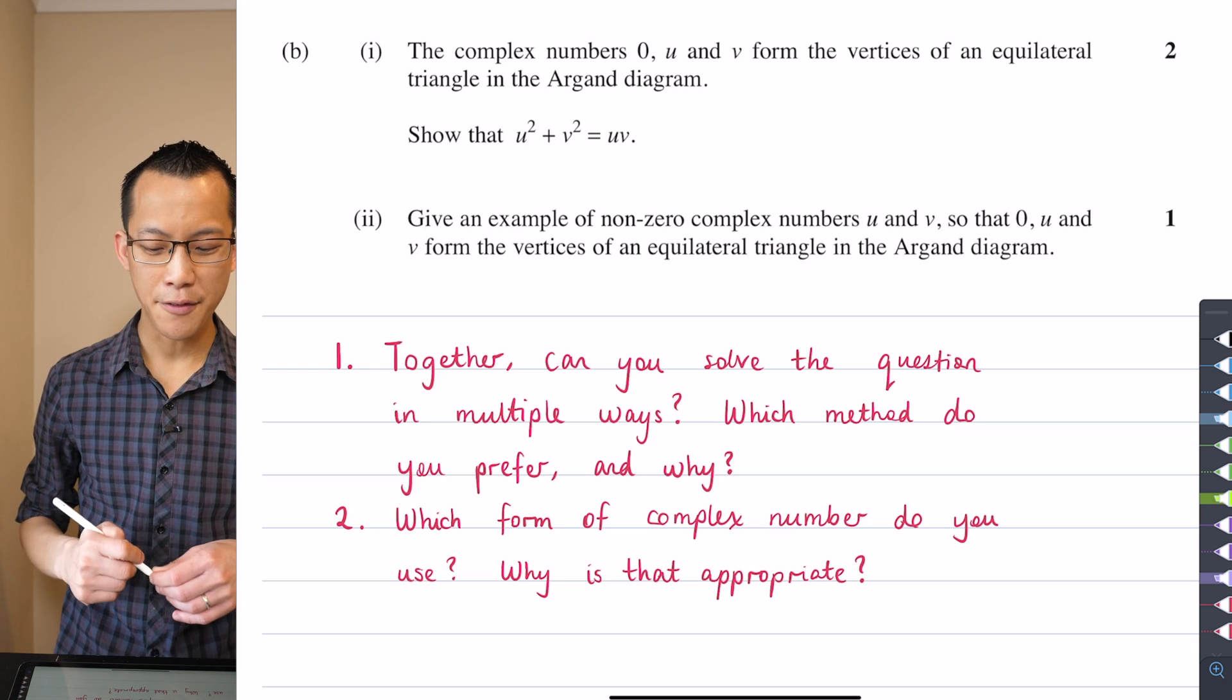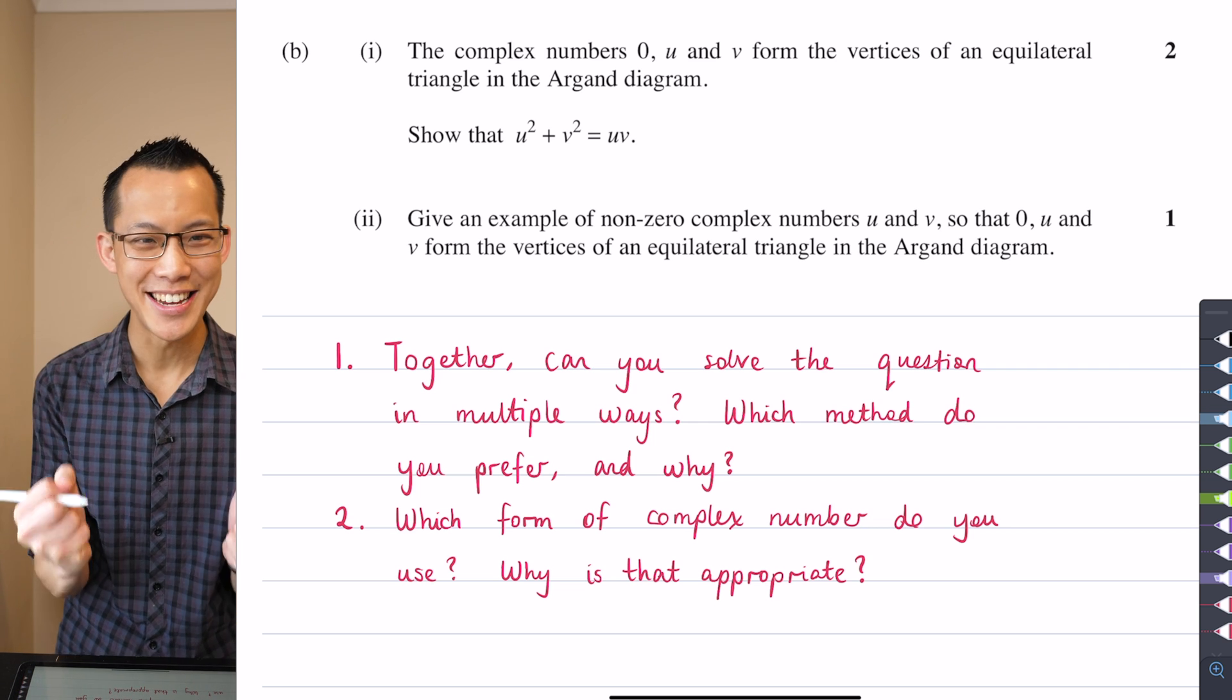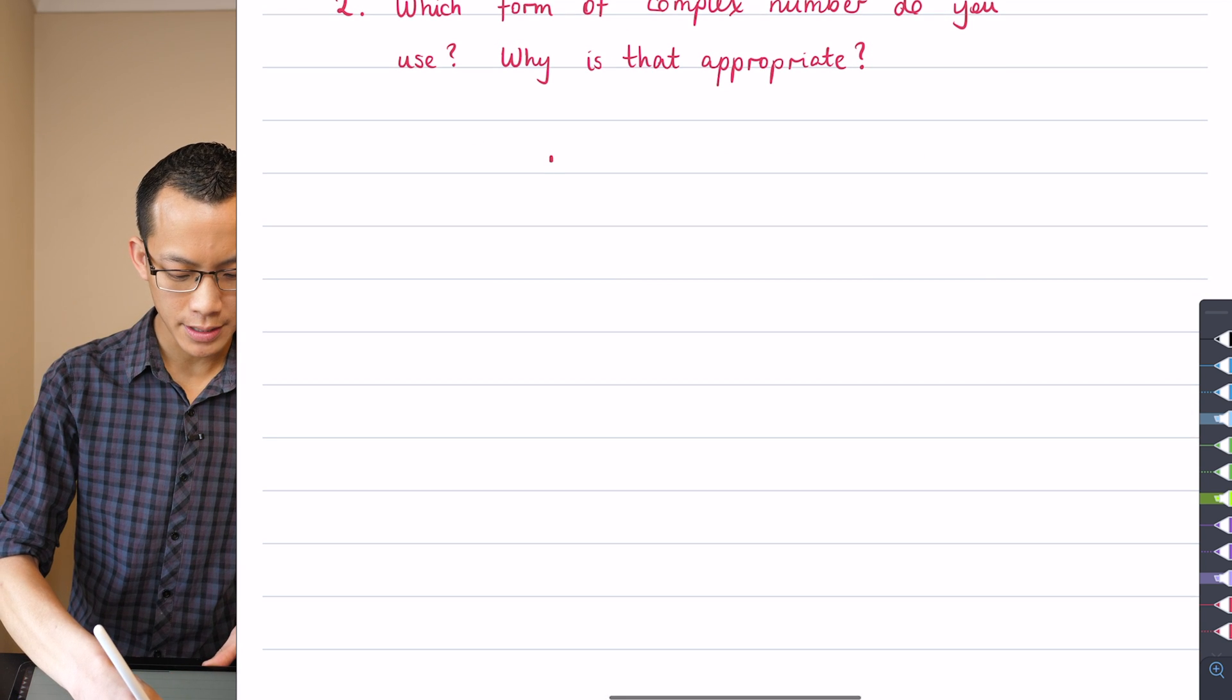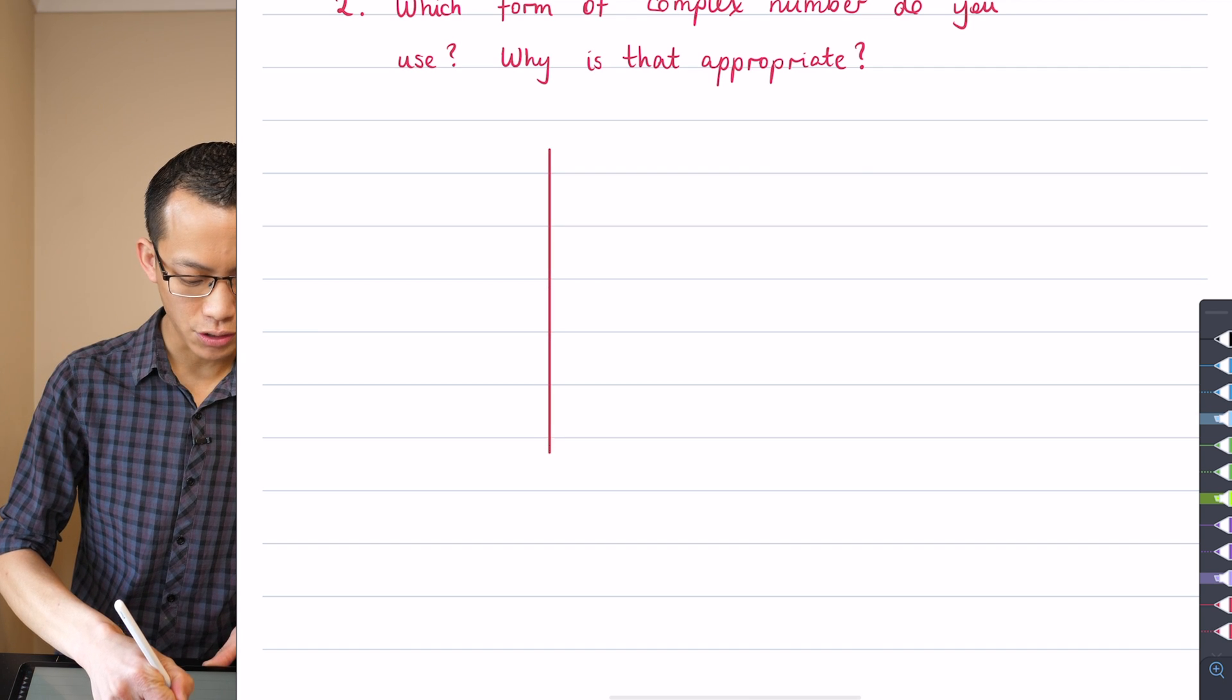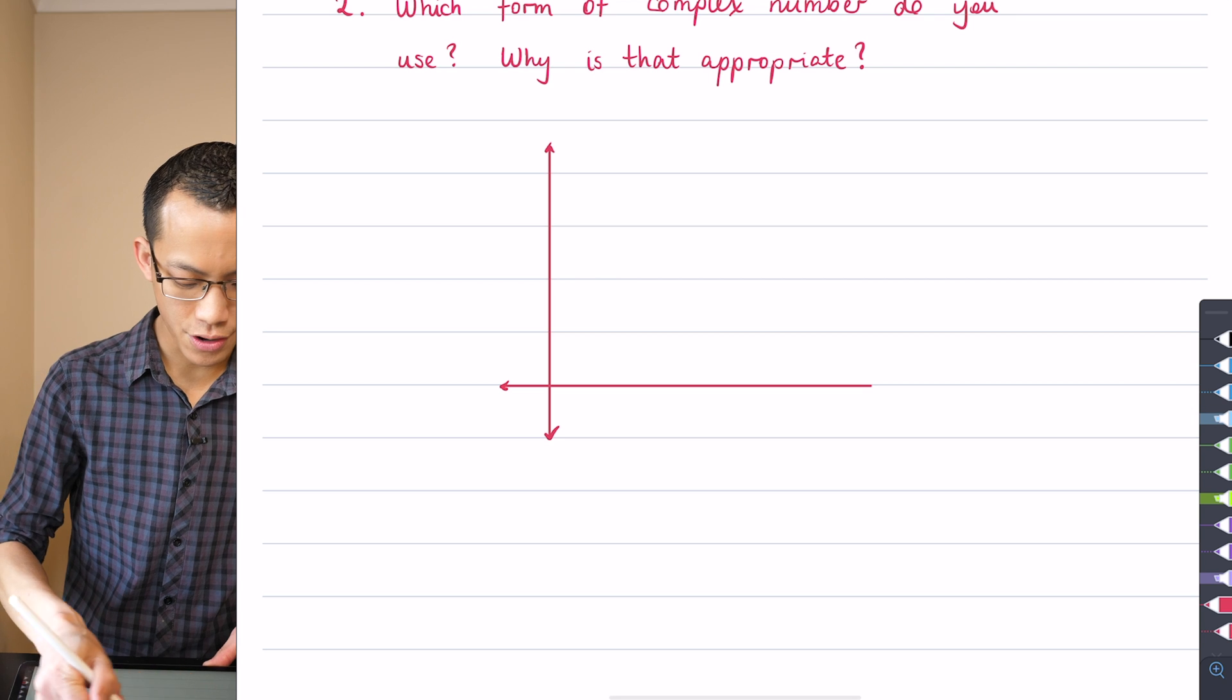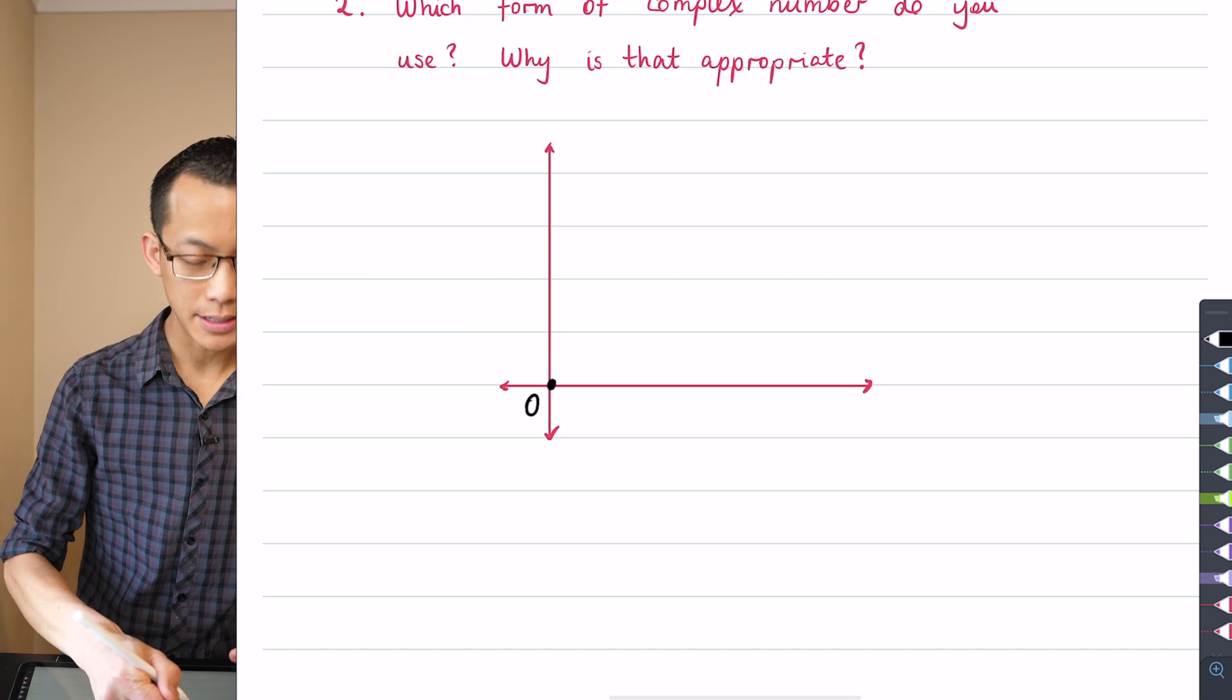The complex numbers 0, U, and V form the vertices of an equilateral triangle in the Argand diagram. The question even says diagram in it, so I'm going to draw an Argand diagram and try to put an equilateral triangle on there. One of the vertices is at the origin, so I'm going to place that 0 there.